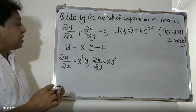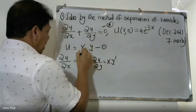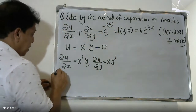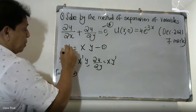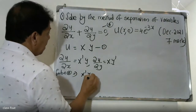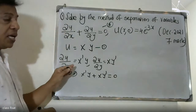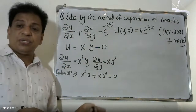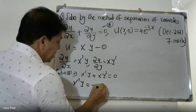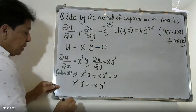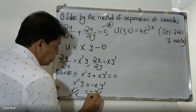Now we substitute these into the equation. Substituting into the PDE gives X'Y + XY' = 0. Rearranging: X'Y = −XY', and then dividing both sides: X'/X = −Y'/Y.